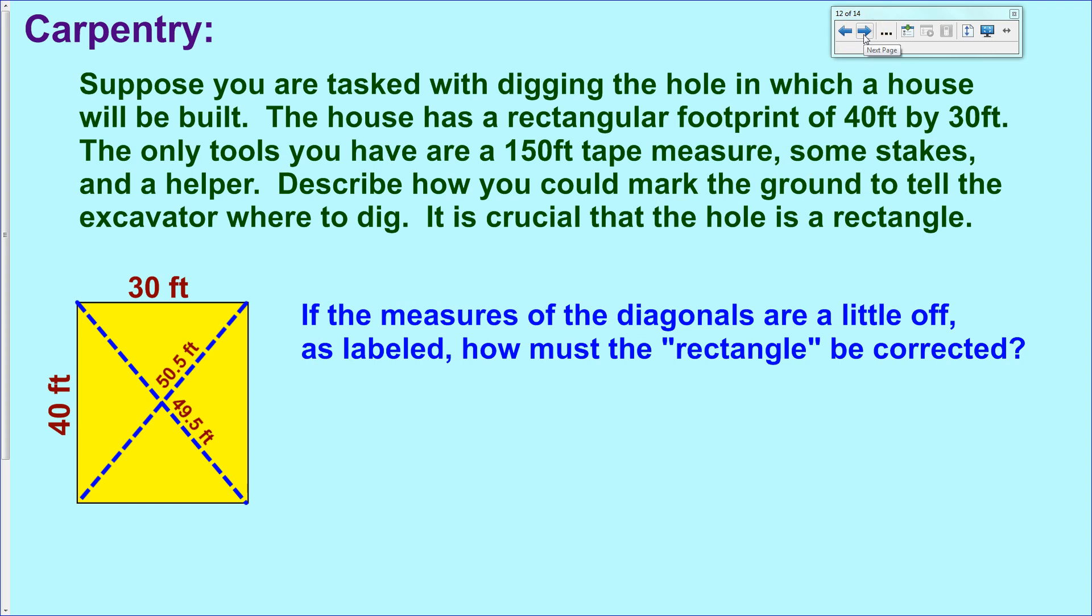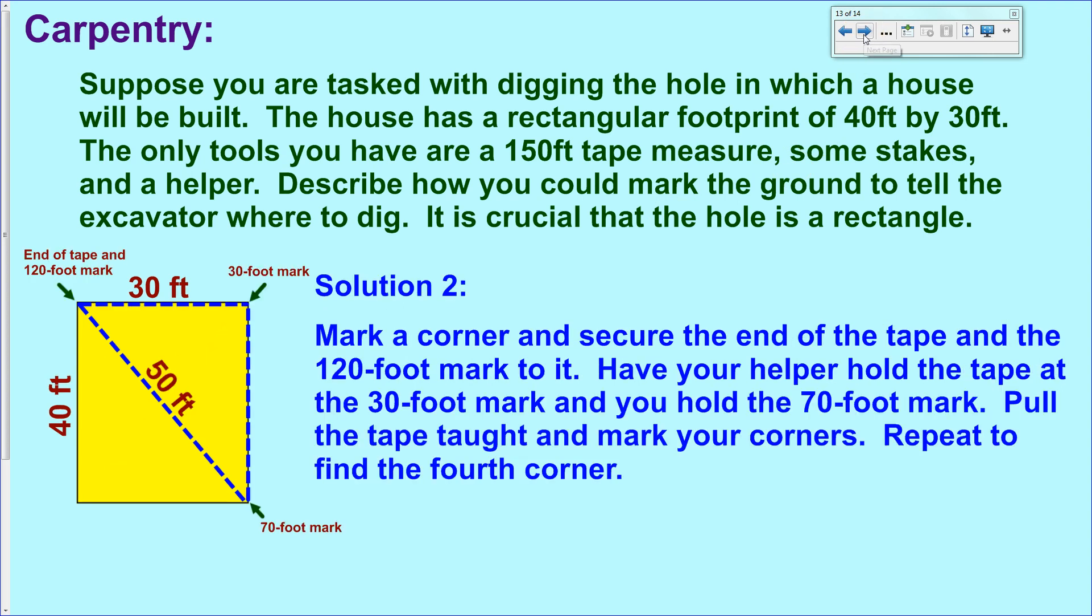Or there's a second way to do it, which actually goes back to other things that we've done before. And it talks about a Pythagorean triple, and this is the way it's usually done. So using two people, three people is better, but throw down a stake in this corner. And you're going to put the stake through the little loop at the end of the tape measure that marks a zero point. And then you're also going to tie the tape measure around the stake at the 120-foot mark. Okay, now why is that? Why is it 120 feet? Why 120 feet, you ask? Well, we'll get to that.